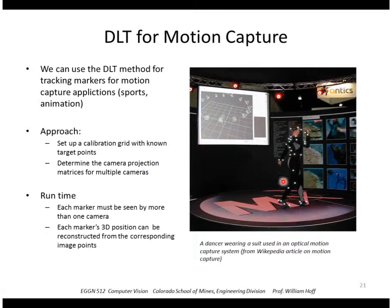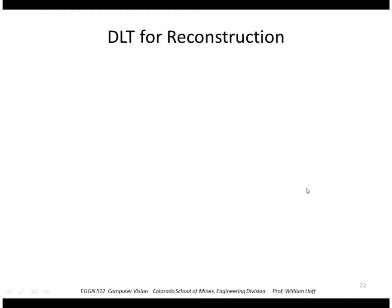And then, in runtime, we put points out there. Each marker must be seen by more than one camera. And if it is, it can be reconstructed from the image points. So how do we do that? Well, using the same equations we did before.